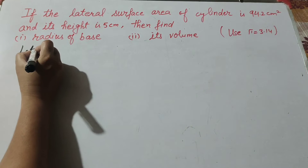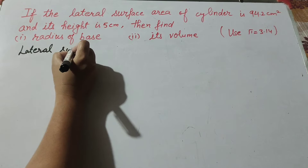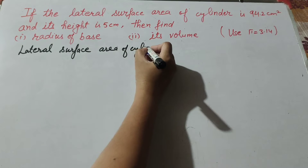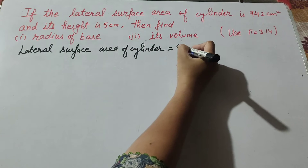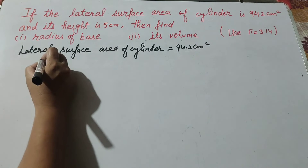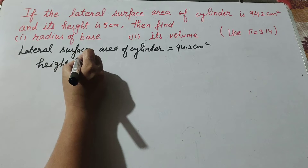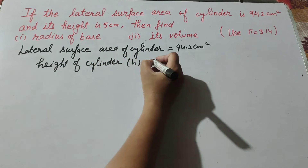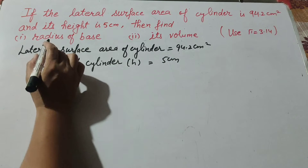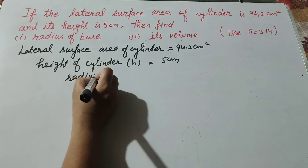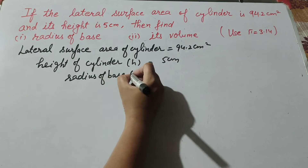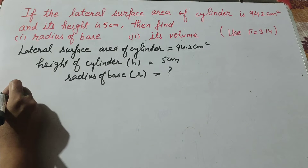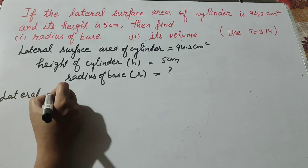Given: lateral surface area of cylinder = 94.2 centimeter square, and height of cylinder h = 5 centimeter. We need to find the radius of the base R. So we know the formula to find the lateral surface area of a cylinder.